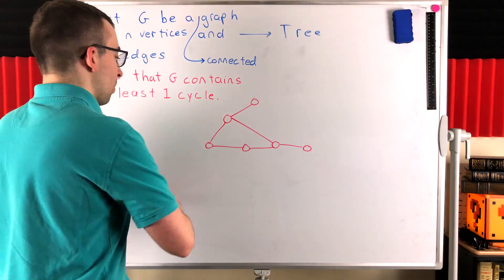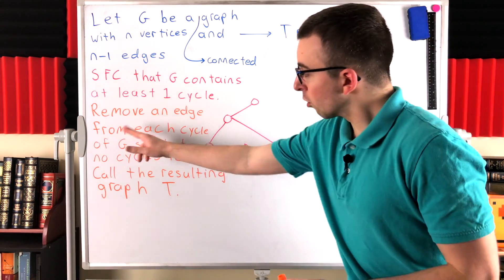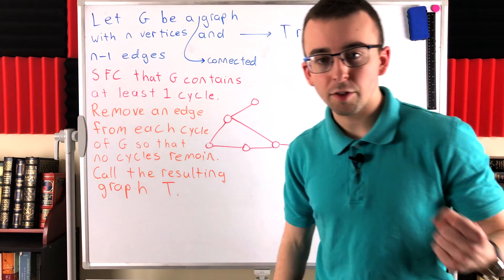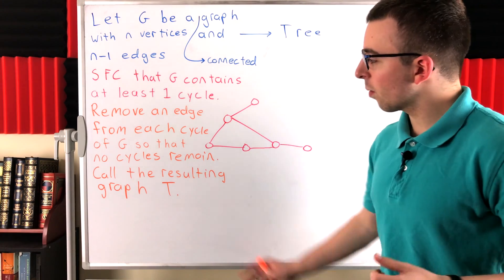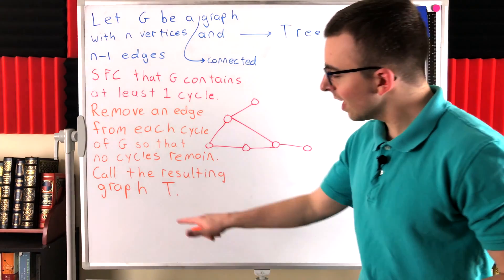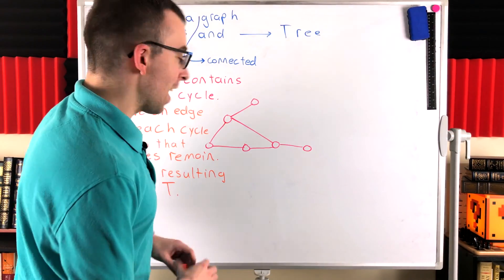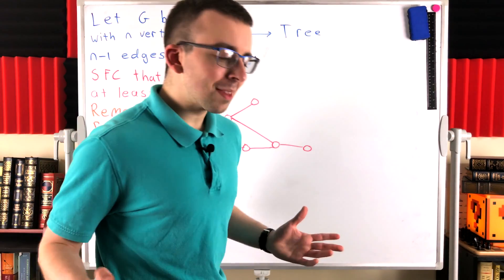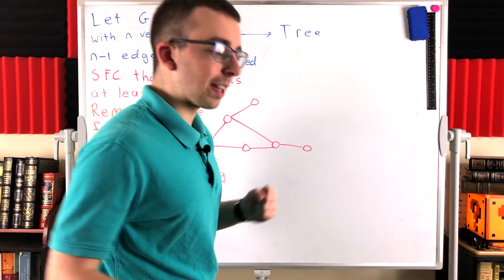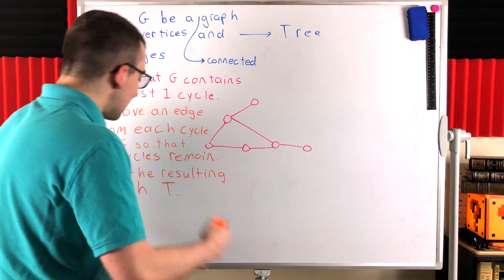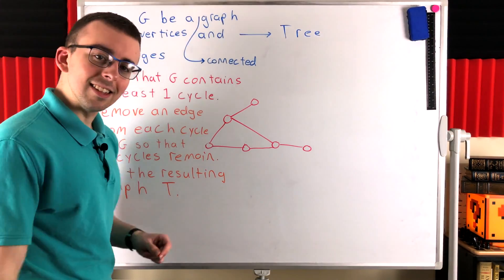Let's write out a brief informal summary of what we're doing. Remove an edge from each cycle of G — remove an edge from a cycle, and if it has any more cycles remove an edge from one of those, and so on until no cycles remain. Call the resulting graph T, which is a deliberately suggestive name. We're going to prove that T is in fact a tree. The other question that remains: after we get rid of all these edges, is the resulting graph T still connected? We know G is connected, but is T connected?